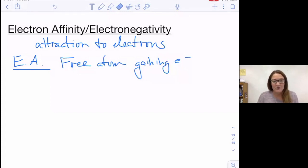The next two trends I like to do together: electron affinity and electronegativity. They mean slightly different things, but they arise for the same reason, so I like to address them together. For both of them, it's an attraction to electrons. It's just the context in which the electrons are being attracted that is slightly different.